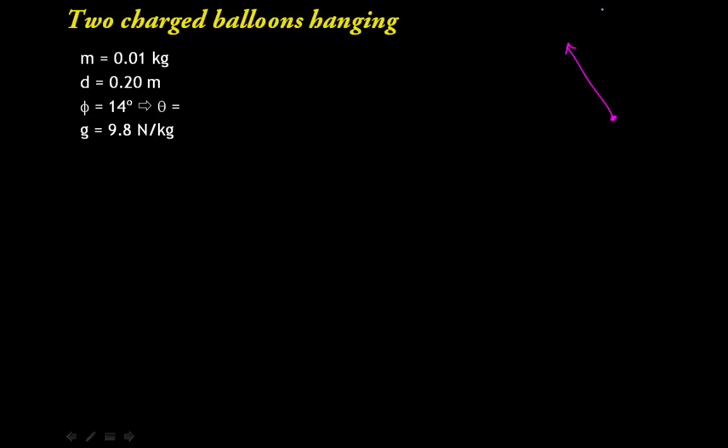So we have the force of the string acting on it, we'll call that T. We have the weight acting on one balloon. And we have an electrical force between the balloons. We'll call that Fe for an electric force.